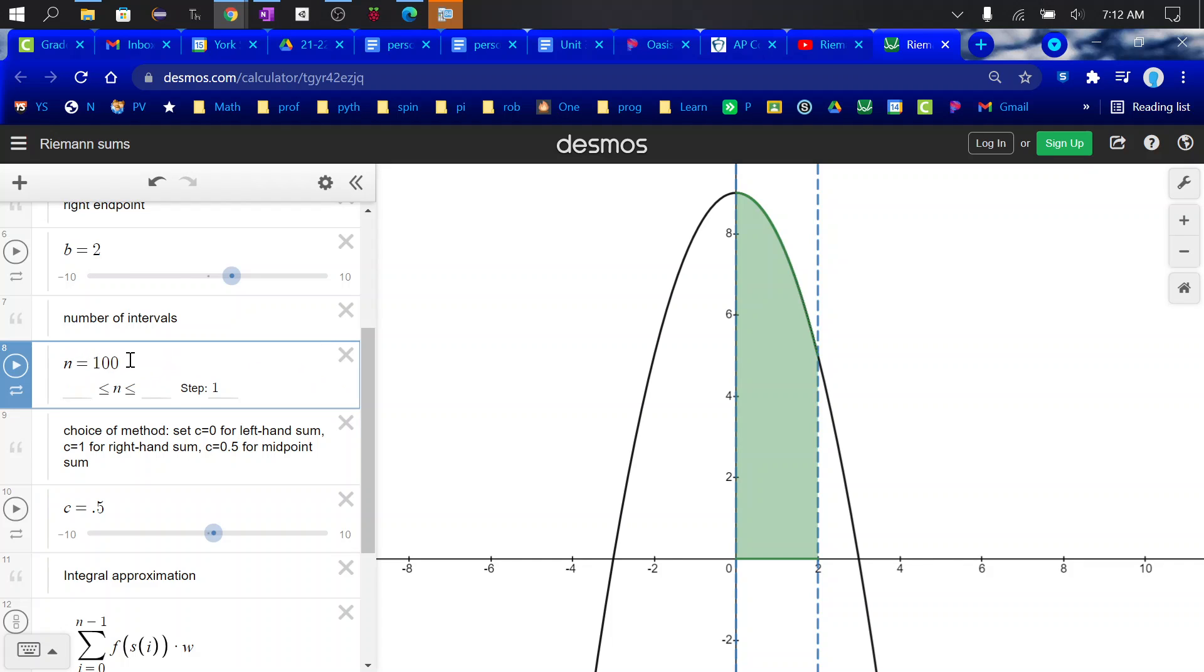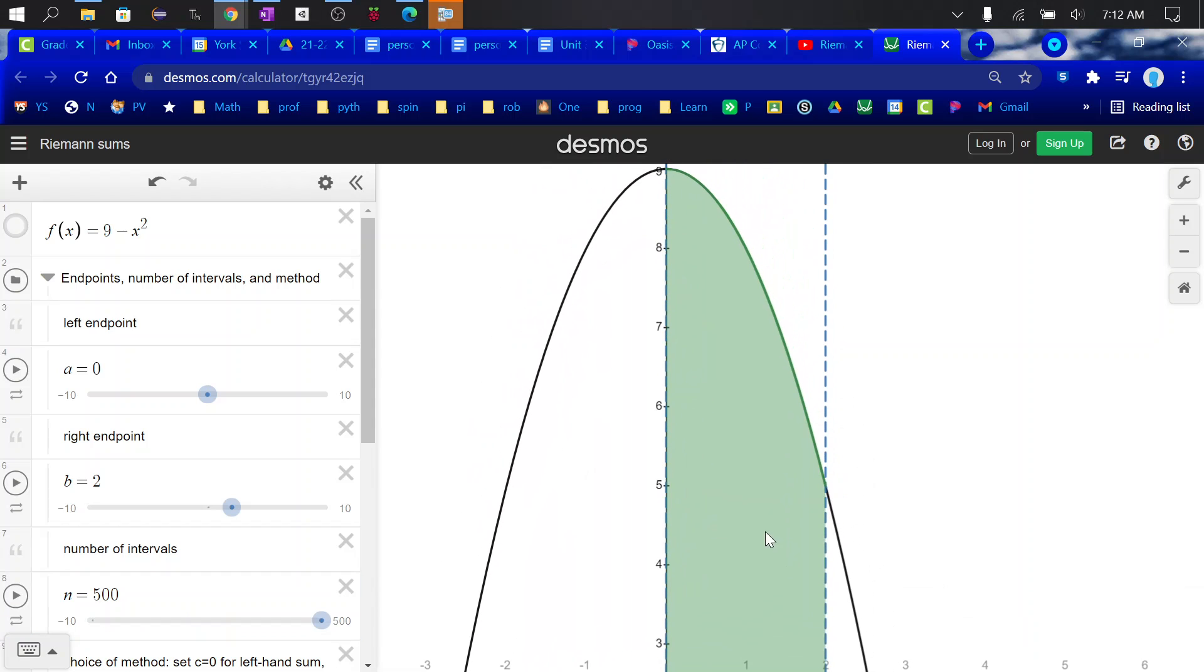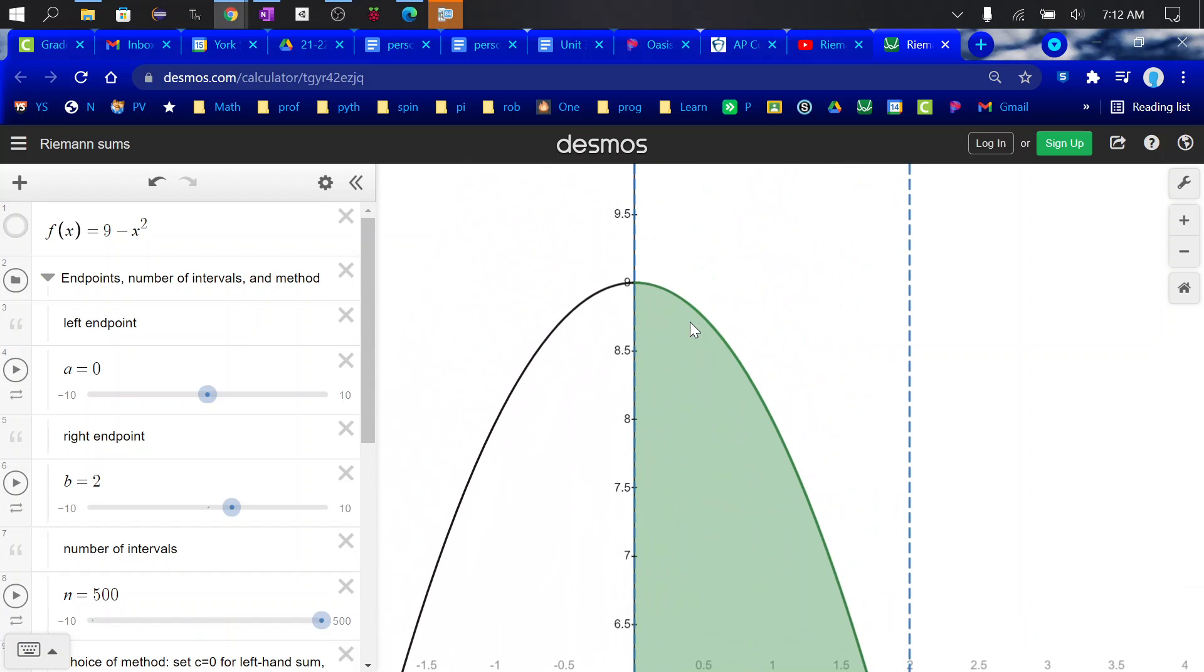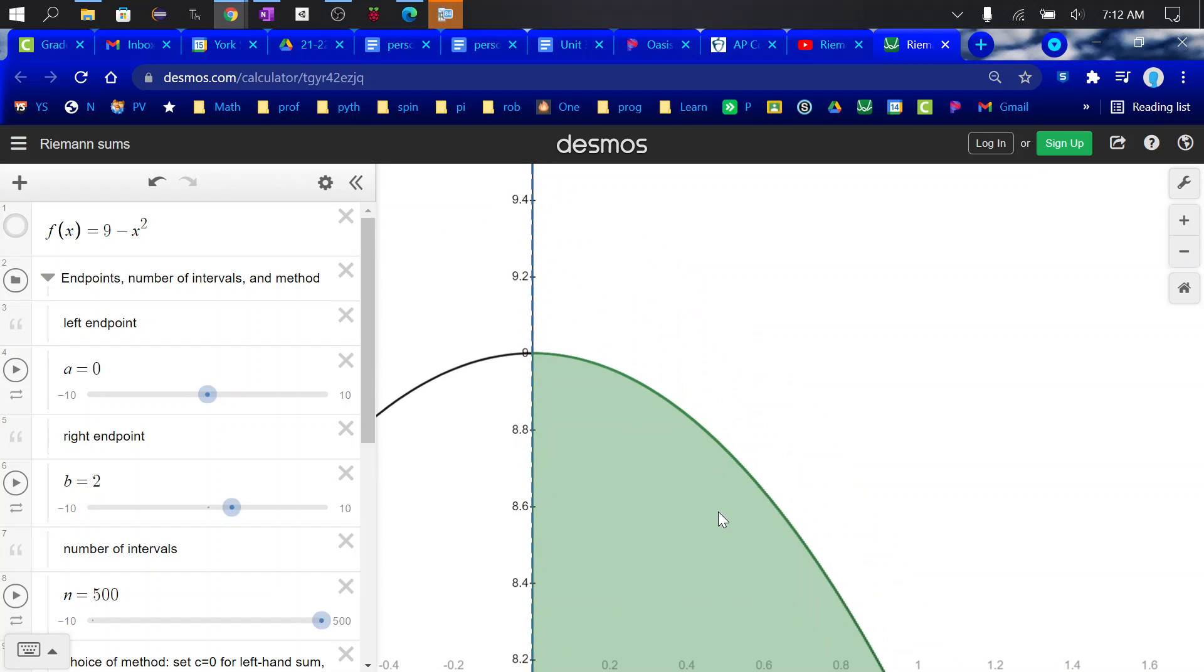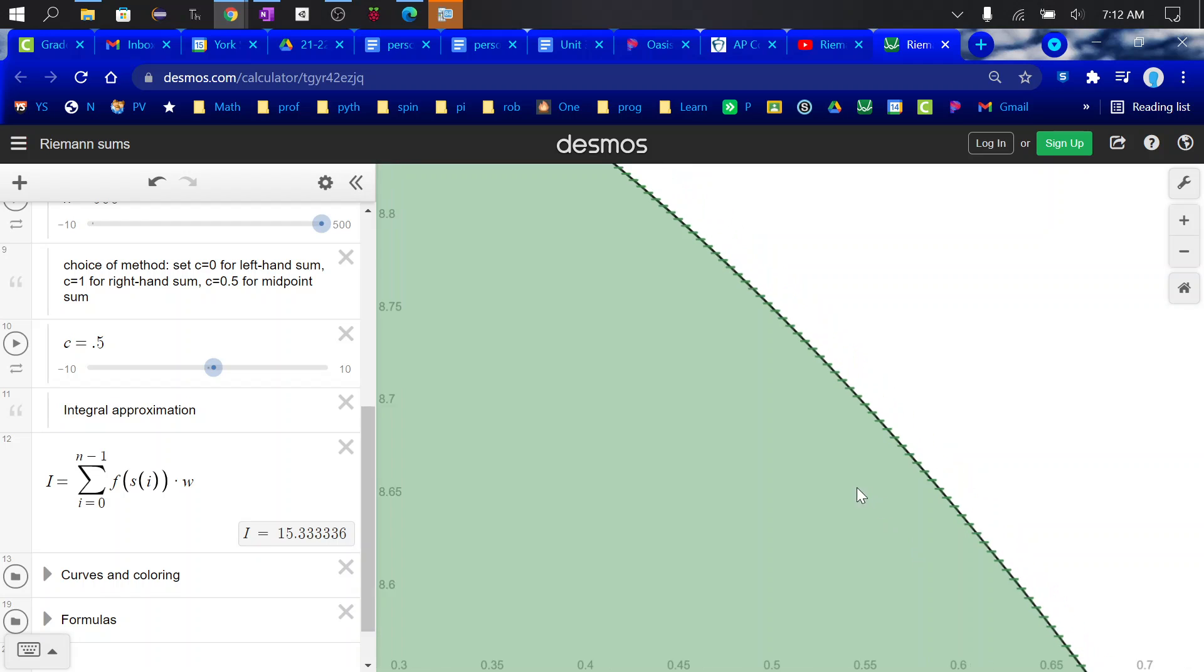You can always click on that and change it to 500 like in your book. And you can always zoom in a little bit. But there are rectangles in there. There they are. Very, very small. 500 of them.